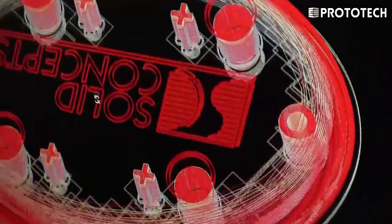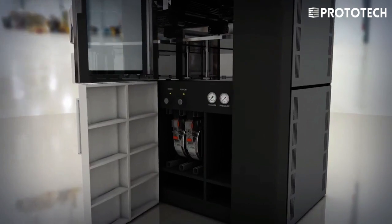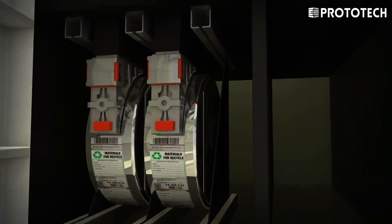The FDM process begins by slicing 3D CAD data into layers. The data is then transferred to a machine, which constructs the part layer-by-layer upon a build platform.